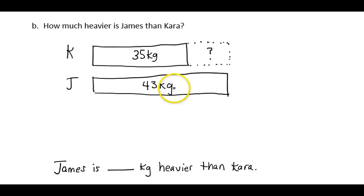Now in order to figure that out, I can consider James' weight as my whole, Kara's is one part, and the empty spot is the other part. So if I take my whole, subtract one part, I get the missing piece.